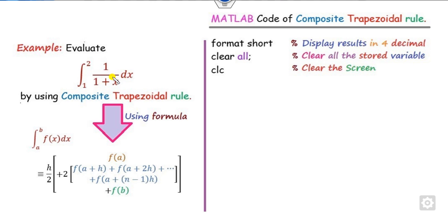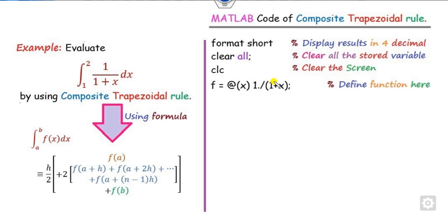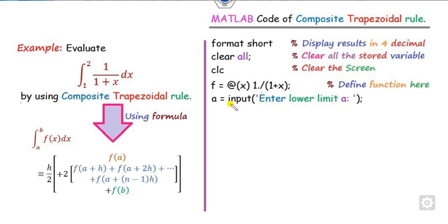Now to define the main function: you first define whatever function you have. Here the function is defined as 1 divided by 1 plus x. If you have a different function, define it here. After that, define the lower limit A. For generalization, you take A as user input — enter the lower limit A. You could also hard-code A equal to 1, but that limits it to one case; I always suggest taking inputs from the user.